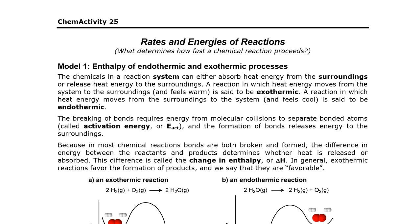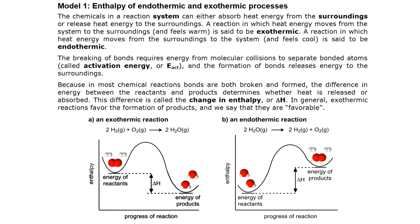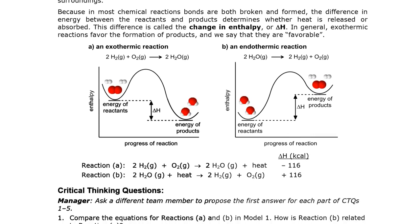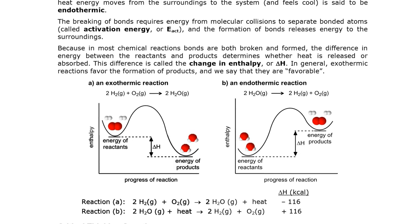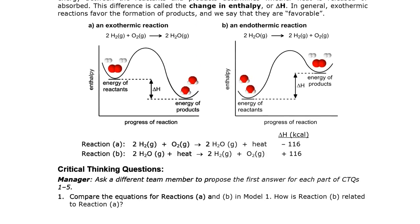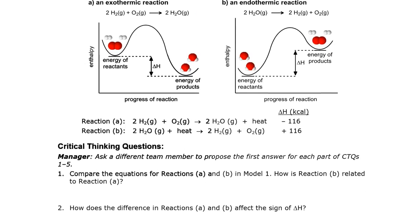Model 1 has quite a bit of text in it, so pause the video and read the three paragraphs, take a look at the two diagrams A and B, and the Reaction A and B information below. You'll need to have the printed copy of the activity in front of you because I won't be able to show all of that on screen at the same time. Go ahead and take some time to examine that model, then pause the video and answer critical thinking question number one. Pause now.